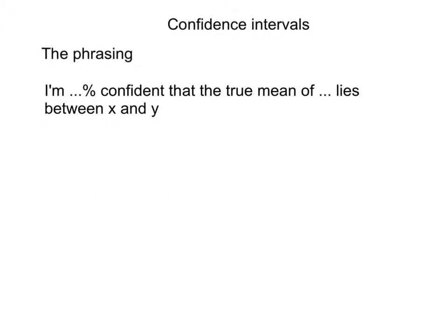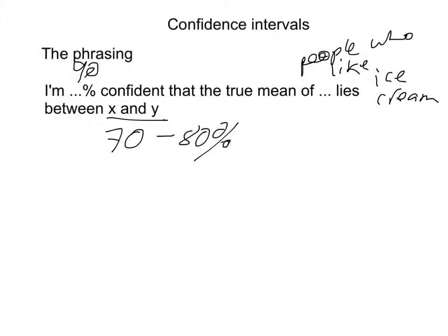It's important, whatever teacher you have or on the AP, when you write confidence intervals, that you include some phrasing, some wordage about the confidence interval besides just the numbers. This is how you would phrase it: I'm 90% confident that the true mean of people who like ice cream lies between 70 and 80%.